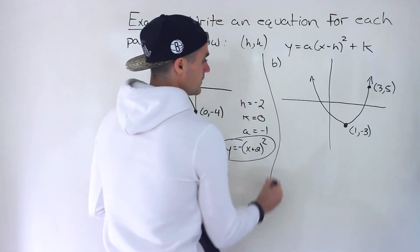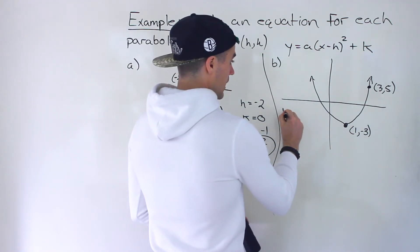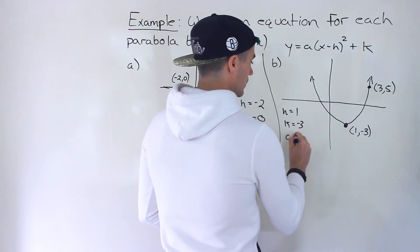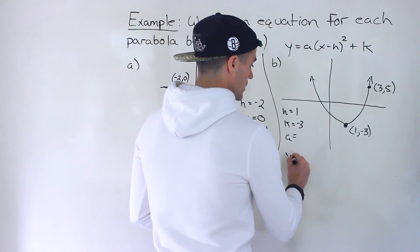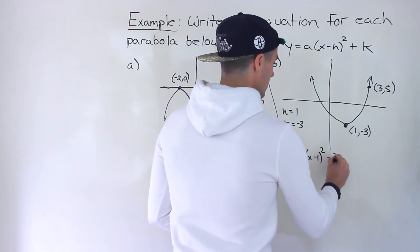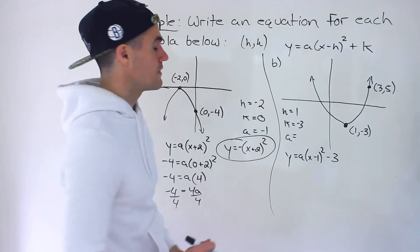Now, what about part B? Here, notice the vertex is one and negative three. H value is one. K value is negative three. Let's solve for the a value. So what we do is we plug in the h value. We plug in the k value. All that's left to solve is the a value.